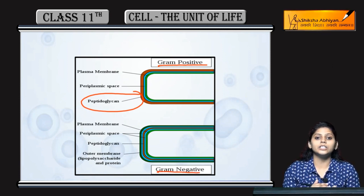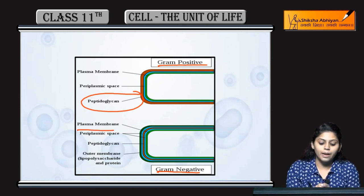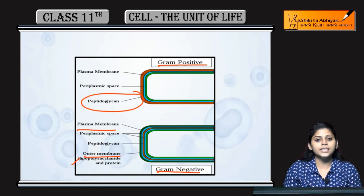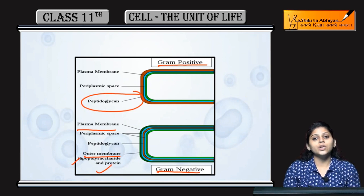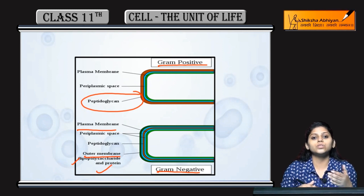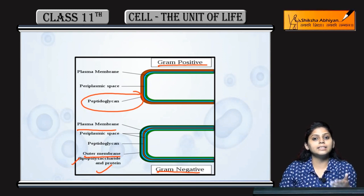In gram negative bacteria, the peptidoglycan layer is present but it is located inside. The outer membrane of gram negative bacteria is made of lipopolysaccharides and proteins. So, due to this difference in cell wall composition, some cells take up the stain and some do not — that is why they are called gram positive and gram negative bacteria.